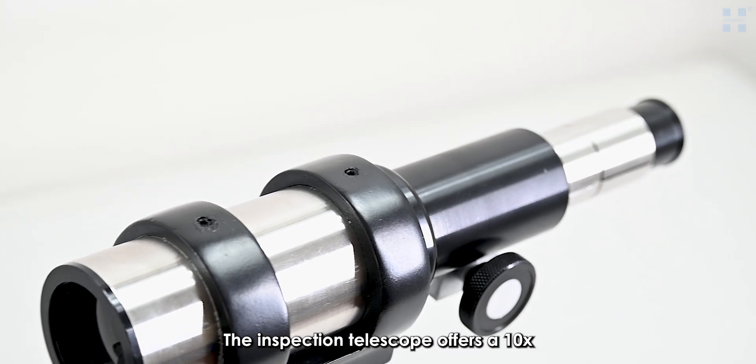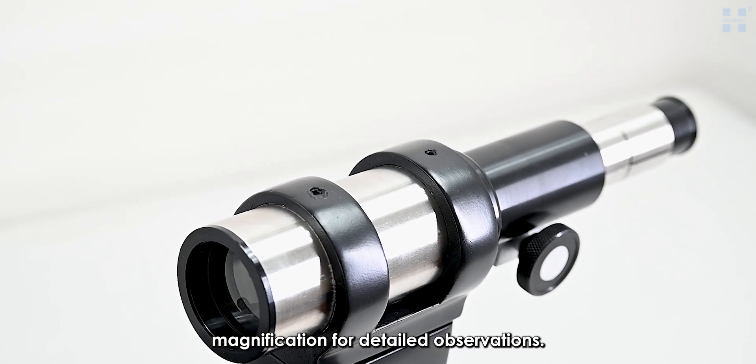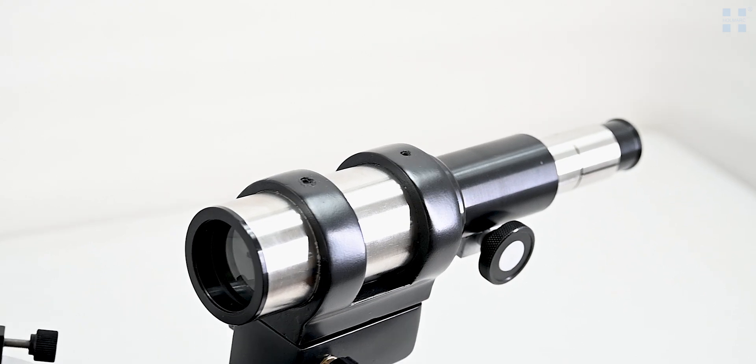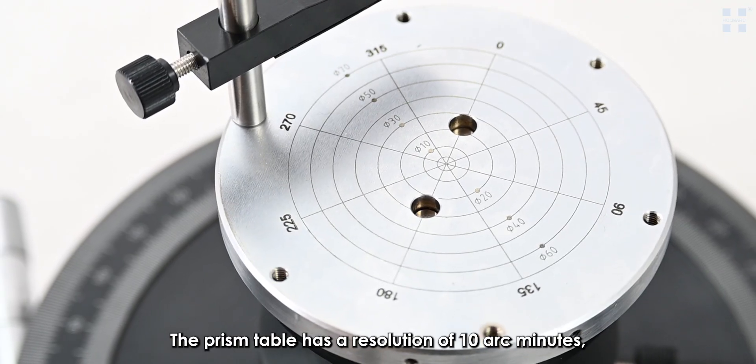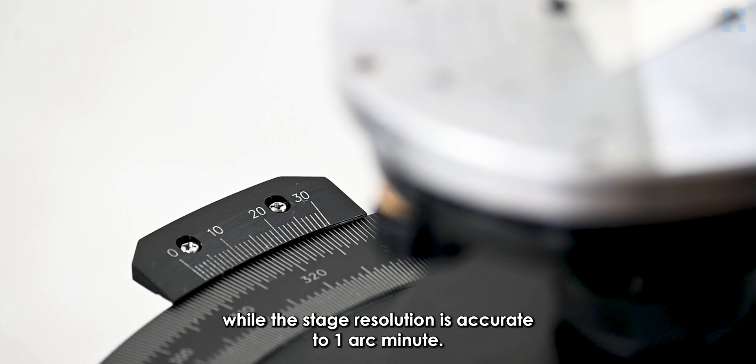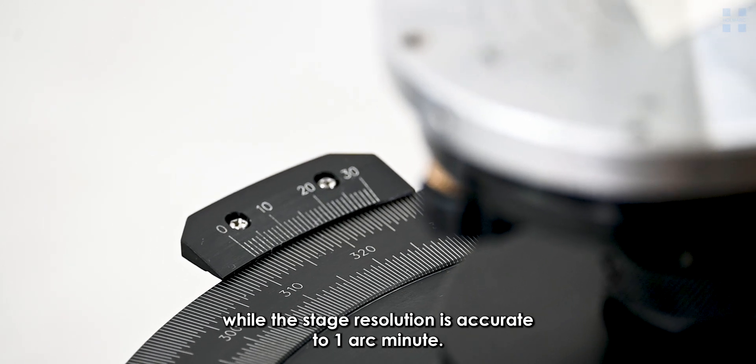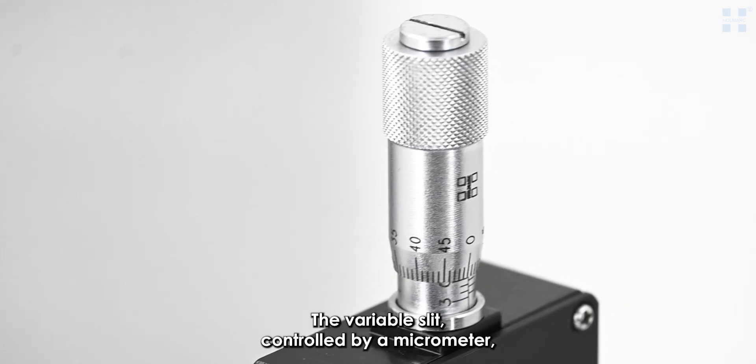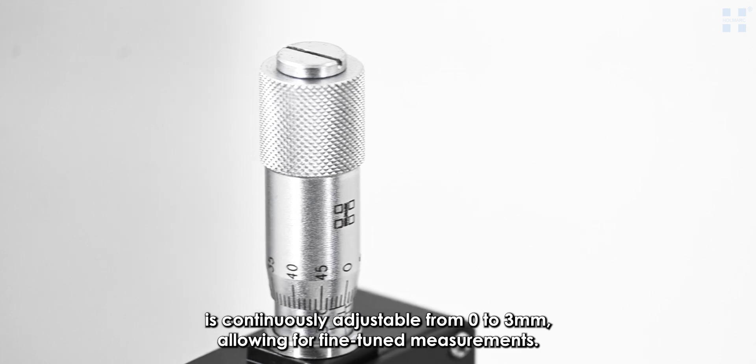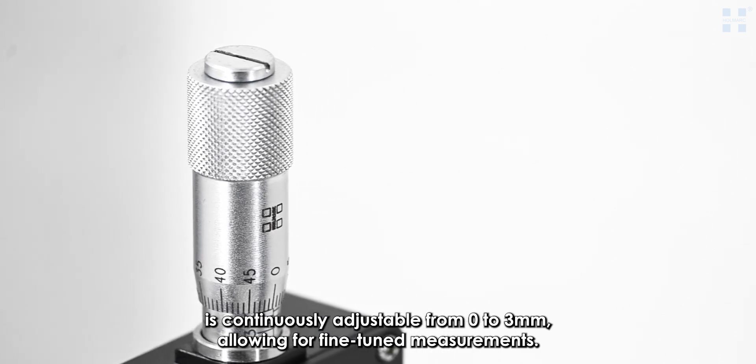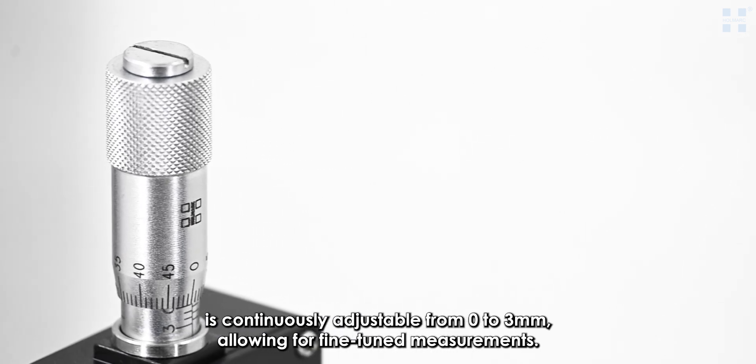The inspection telescope offers 10 times magnification for detailed observations. The prism table has a resolution of 10 arc minutes, while the stage resolution is accurate to 1 arc minute. The variable slit, controlled by a micrometer, is continuously adjustable from 0 to 3 mm, allowing for fine-tuned measurements.